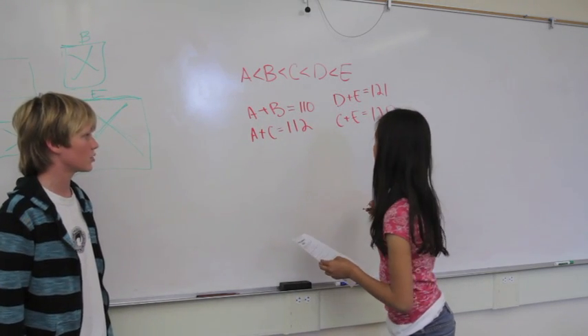Therefore, B plus C cannot produce the next amount, which is 113. So we have to say that A plus D is 113. After this, we can say that B plus C next is going to be 114.